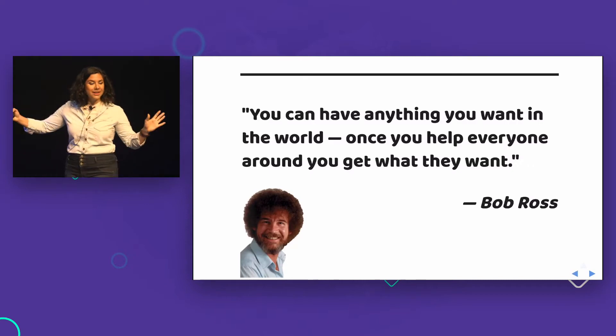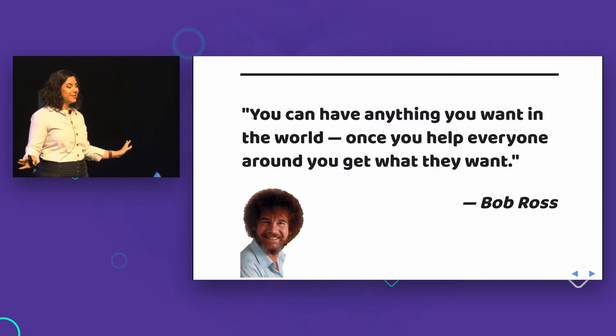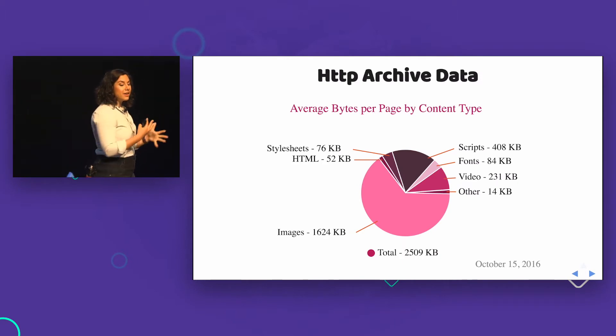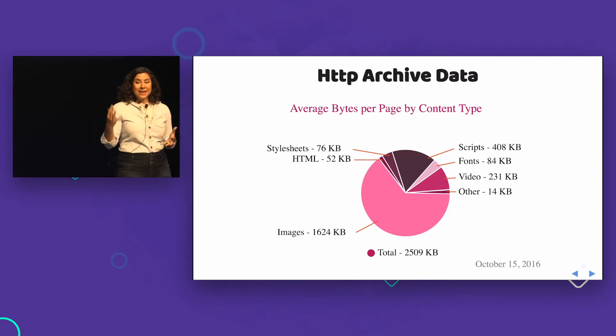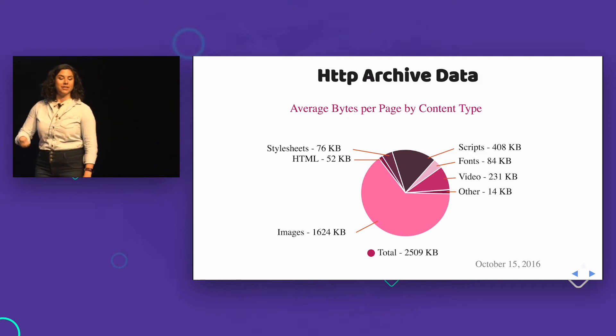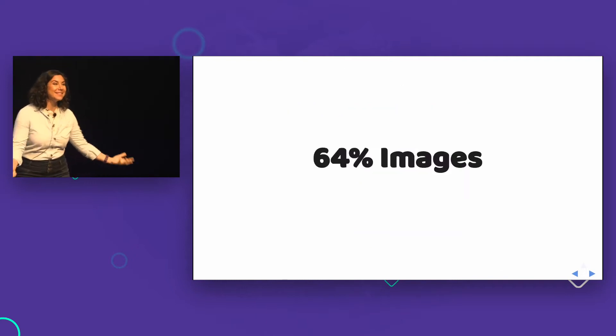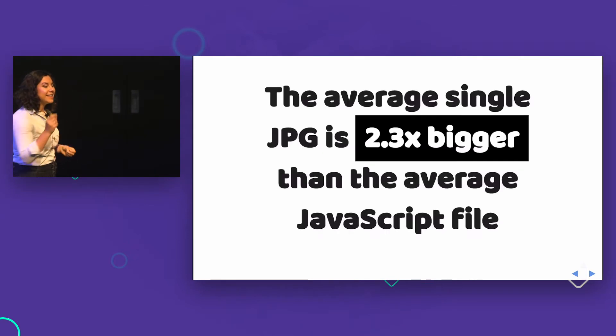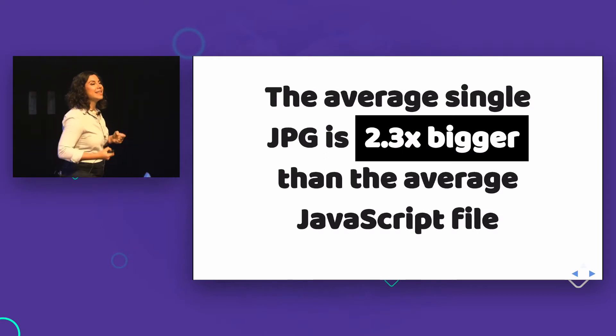Back to Bob Ross: 'You can have anything you want in the world once you help everyone get what they want.' HTTP Archive does a bi-monthly data archive of the average website. Right now, the average website is 2,509 kilobytes, with images taking up 1,624 of those — 64% of total page weight. That's why I want to talk about images today. In fact, the average single JPEG is 2.3 times bigger than the average JavaScript file. You can take out half of one image and have all the jQuery you want.